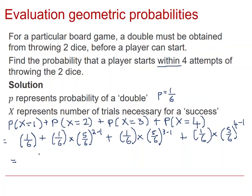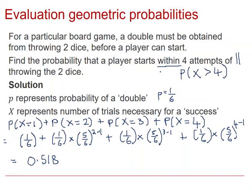For those thinking there's a cleverer way, you could consider the opposite event. The opposite of achieving success at one, two, three, or four trials would be the probability that the number of trials required is greater than four. Subtracting that from one gives the required probability — you could try that out for yourselves.